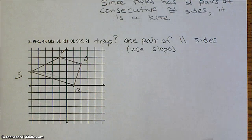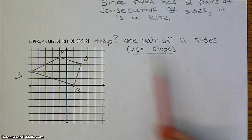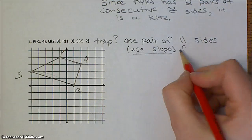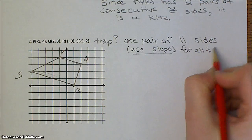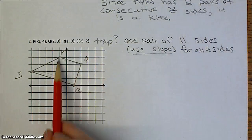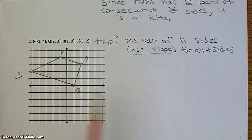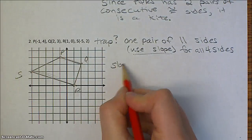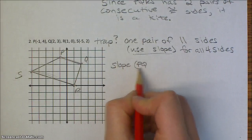So in order to solve this problem, we need to use the slope method for all four sides. Because what we want to show is that PQ and SR are parallel, but the other pair of opposite sides should not be parallel, and then it would be a trapezoid.